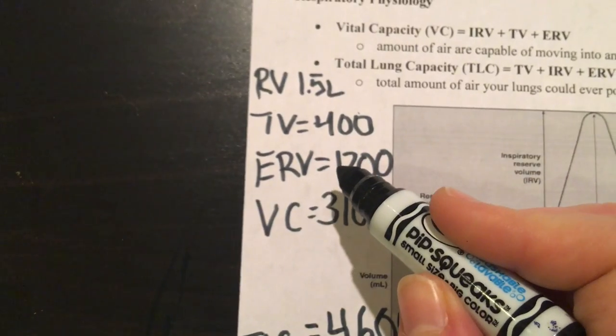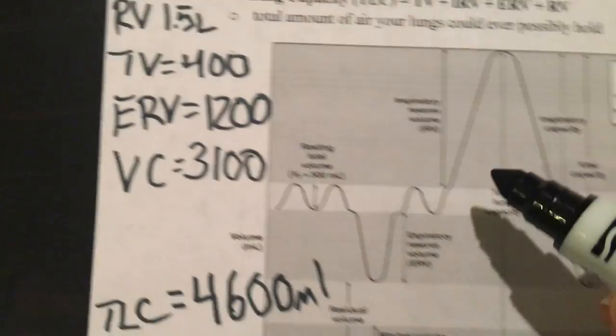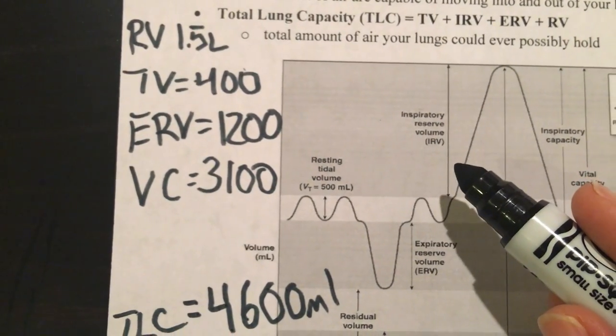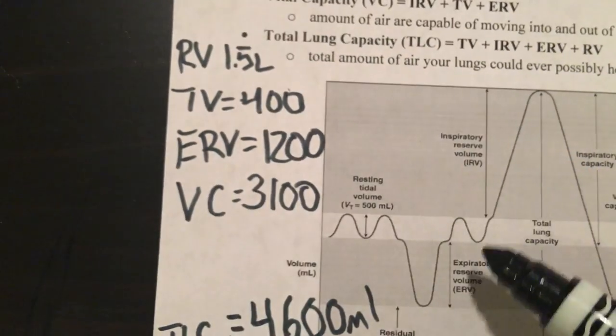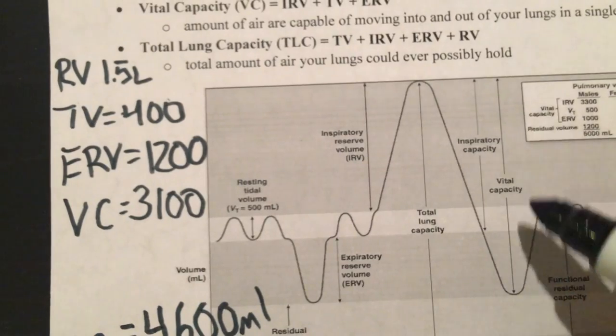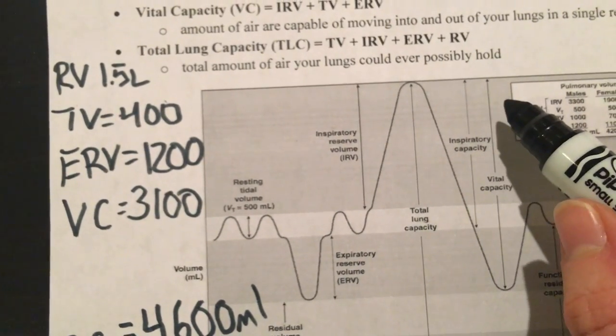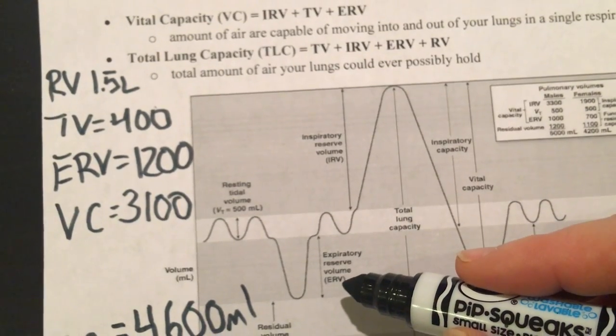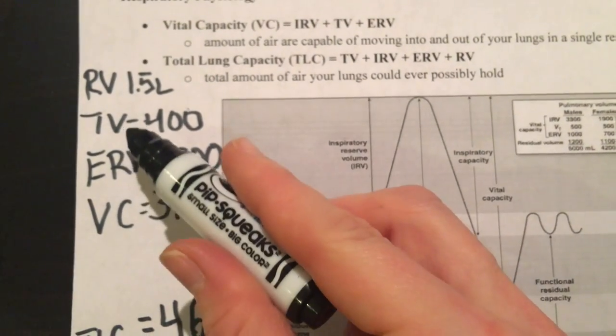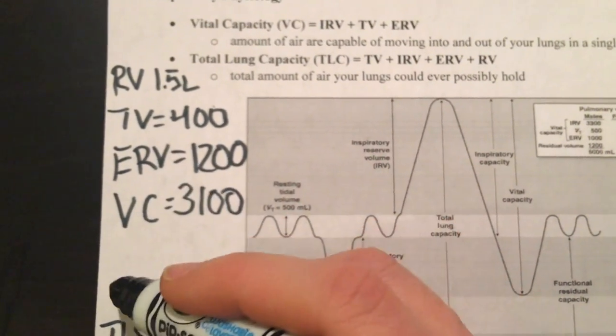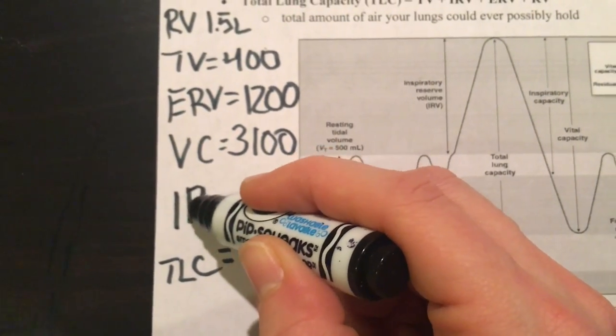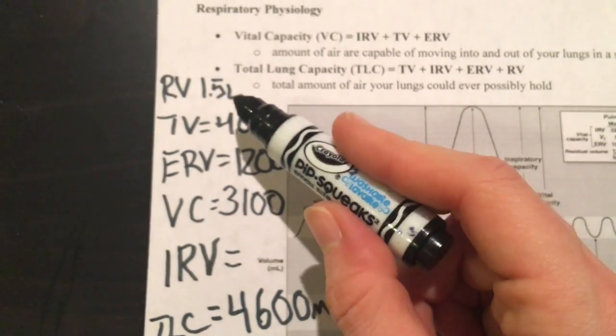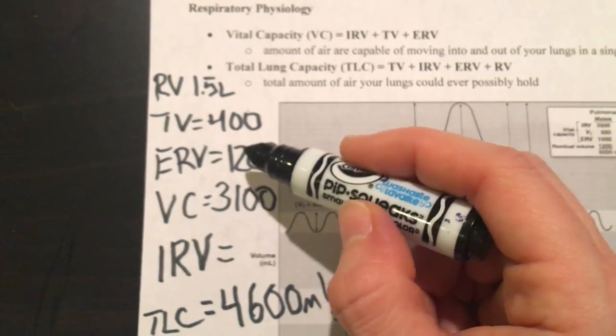The other thing that we can calculate is inspiratory reserve volume. This spirometer unfortunately does not allow us to measure this directly, but if we take our vital capacity, remember vital capacity is just IRV plus tidal volume plus ERV. So we have the ERV and the tidal volume, so we can calculate the inspiratory reserve volume by taking our vital capacity and subtracting these two numbers.